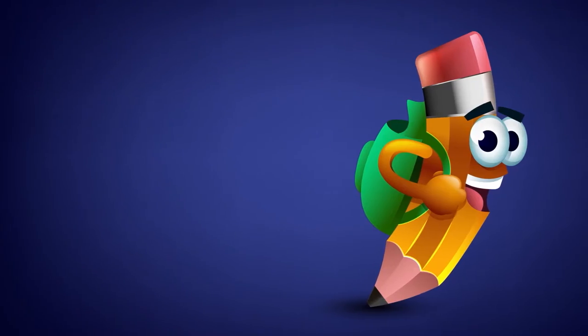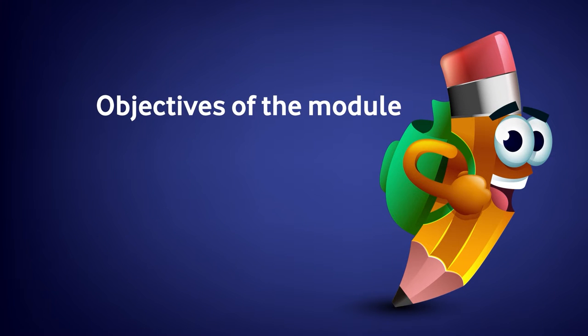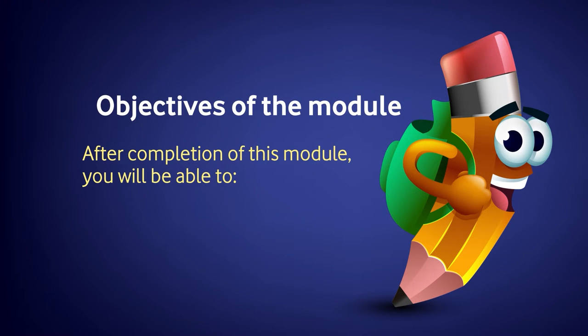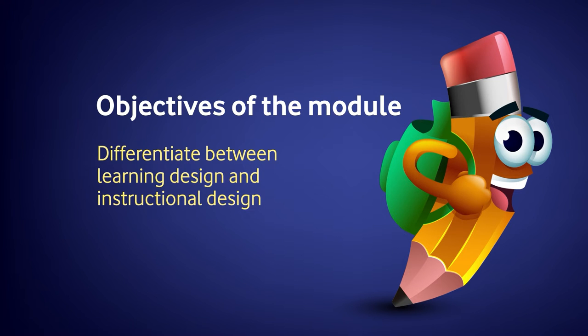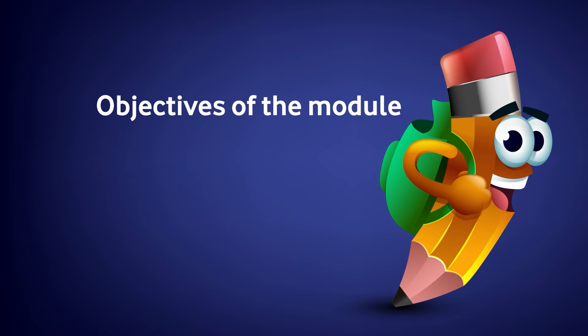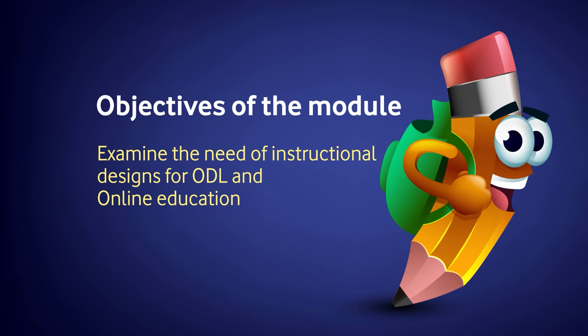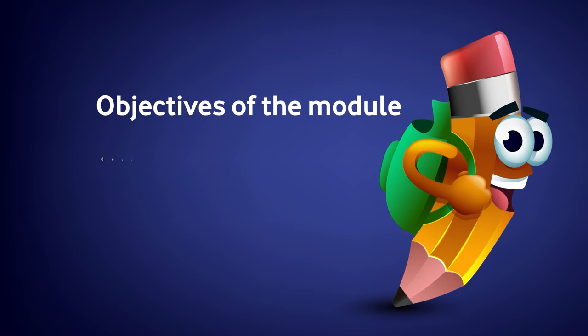After completing all sections of this module, you are expected to develop at least a blueprint. The major objectives of this module are: after completion, you will be able to differentiate between learning design and instructional design, and you will be able to examine the need of instructional design for open and distance learning and online education.